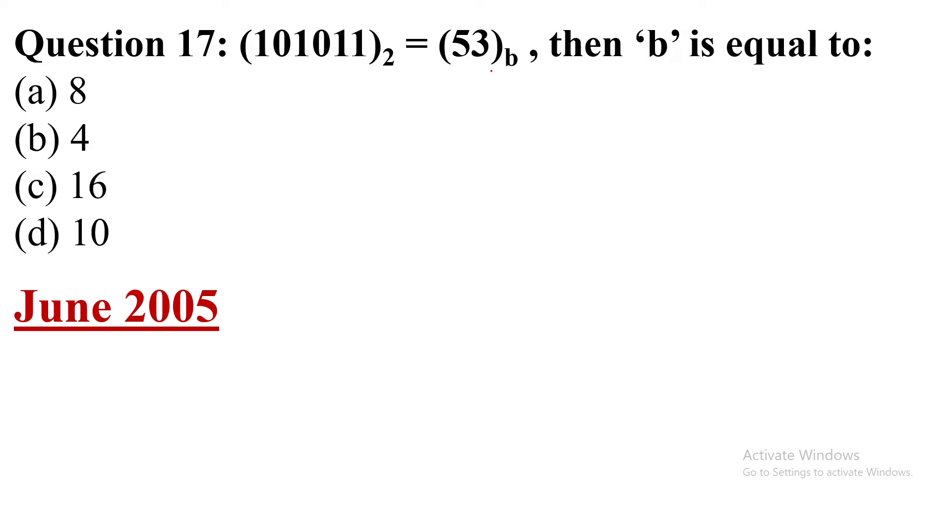101011 base 2 equals 53 base b, then b is equal to: option a is 8, option b is 4, option c is 16, and option d is 10. This question was asked in June 2005.